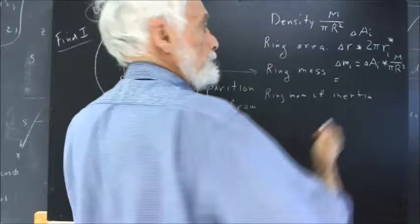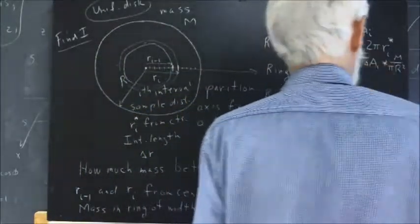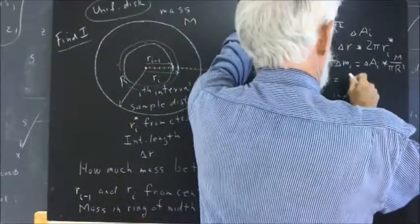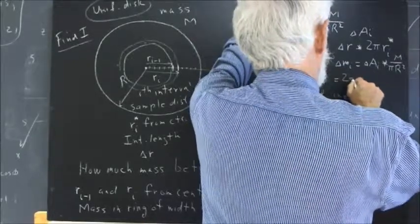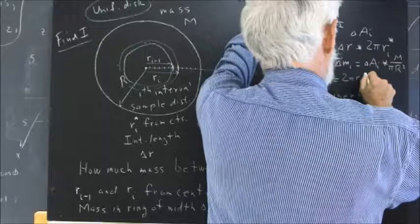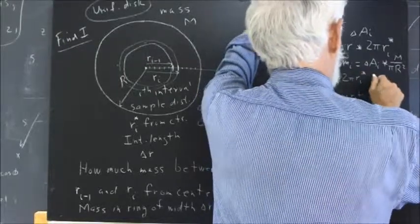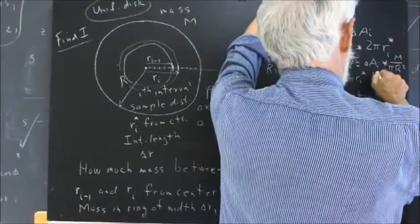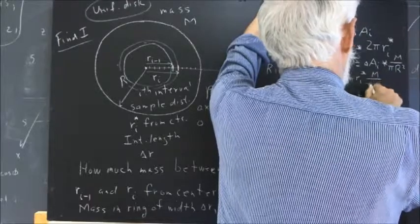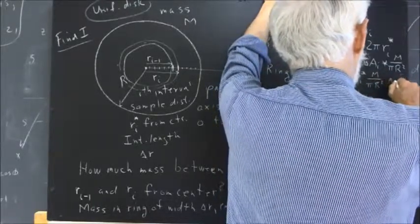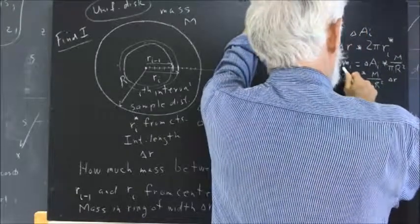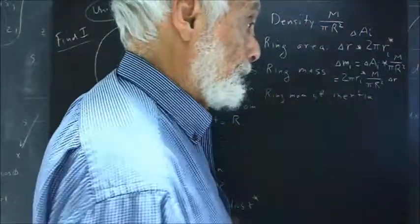And the delta A sub i is this, so we get 2 pi R sub i star times M over pi R squared times delta R. So that's a mass contribution of this ring.